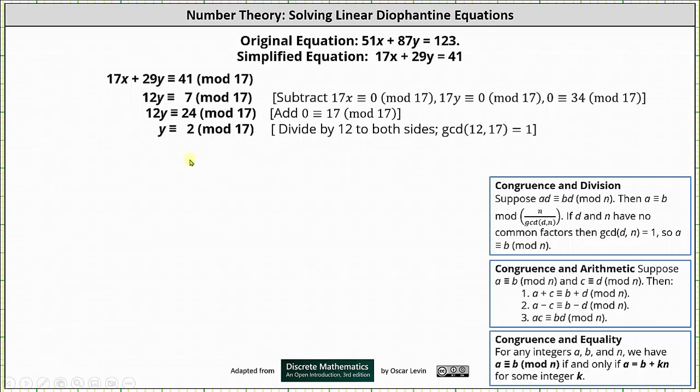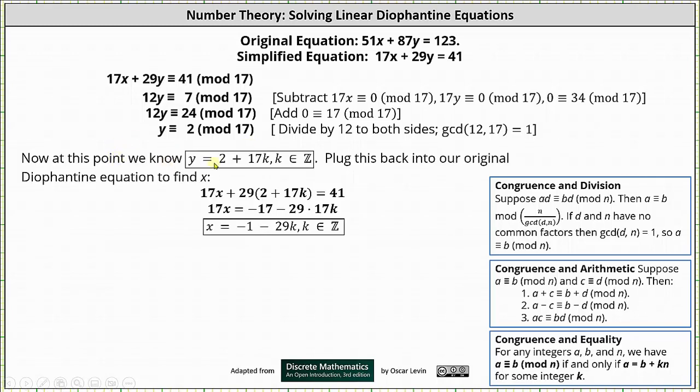And now that we have the congruence solved for y, we can express y as y = 2 + 17k, where k is an integer. This comes from the congruence and equality property shown here at the bottom of the screen.